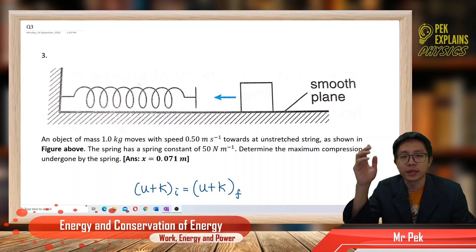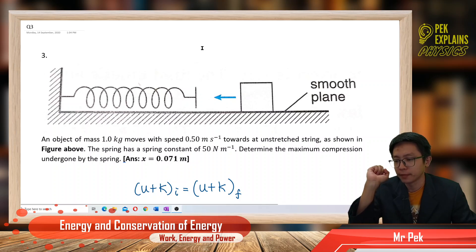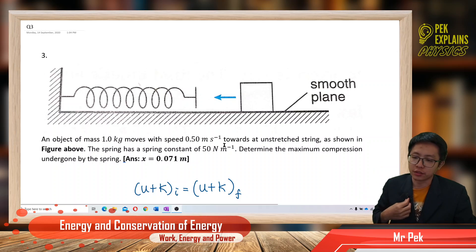Hi, now let's look at the third question in conservation of energy. An object of mass 1 kilogram moves with speed 0.5 meters per second towards an unstretched spring as shown in the figure above. The spring has a spring constant of 50 Newton per meter. Determine the maximum compression undergone by the spring.